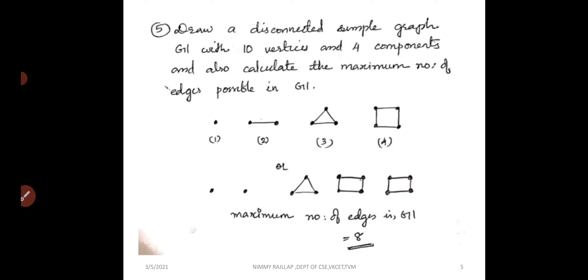The next question is, draw a disconnected simple graph G1 with 10 vertices and 4 components and also calculate the maximum number of edges possible in it. So we have 10 vertices.